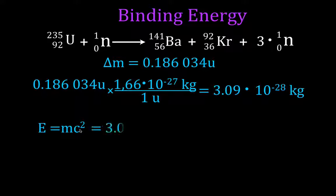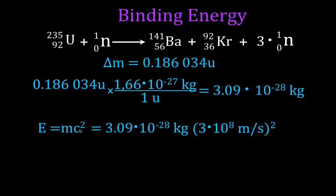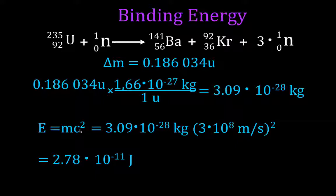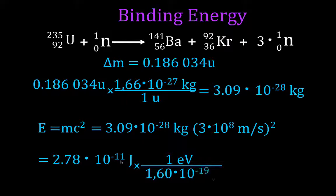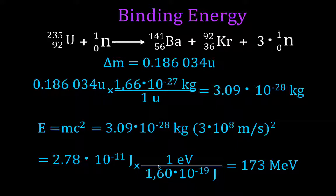We plug that mass value and the speed of light into E = mc², and that tells us the energy released from one fission of uranium-235 is 2.78 × 10⁻¹¹ joules. When talking about binding energy, values are usually given in electron volts. We convert using 1 electron volt = 1.6 × 10⁻¹⁹ joules, and we get 173 mega electron volts — that is 173 × 10⁶ electron volts. That is the answer to the first part of our question: the energy released from one fission reaction of uranium-235.